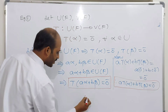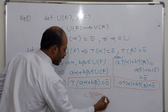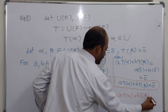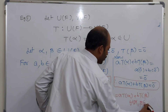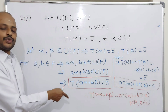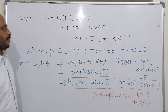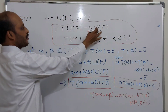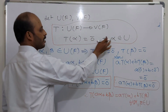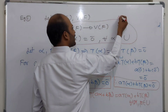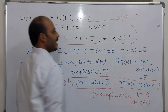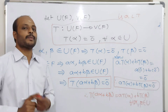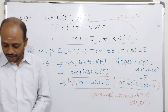Combining these two results, T(aα + bβ) = a·T(α) + b·T(β), for all α, β in U. Therefore T is a linear transformation. This linear transformation is known as the zero transformation.